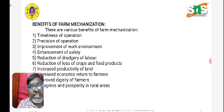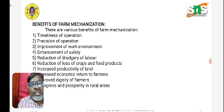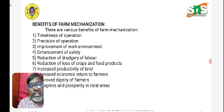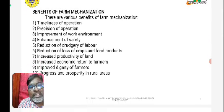Enhancement of safety — when comparing with manual working by laborers, using proper and appropriate tools as well as machineries increases the safety of laborers working on the farm. Reduction of drudgery of labors and reduction of loss of crops and food products are also benefits. It leads to increase in productivity of land.